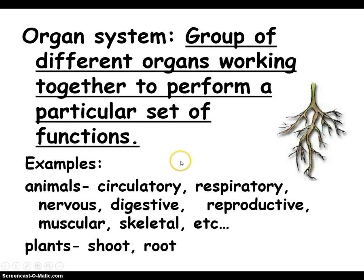Examples of organ systems in animals include circulatory, respiratory, nervous, and digestive — we're going to spend about eight weeks on this in class. And then in plants, we have things like the shoots and the roots.